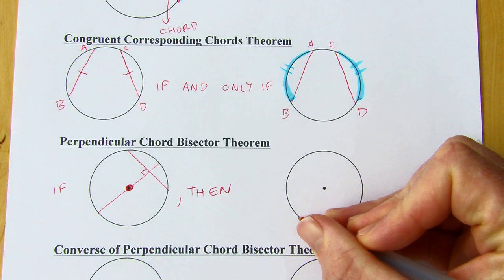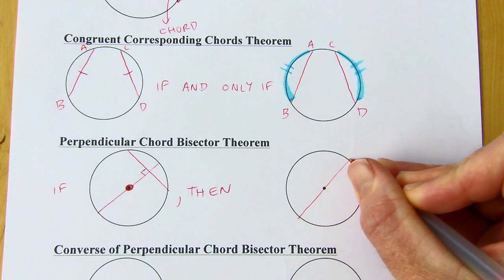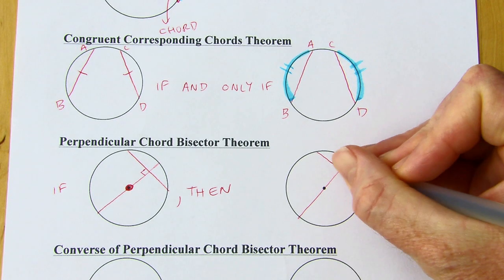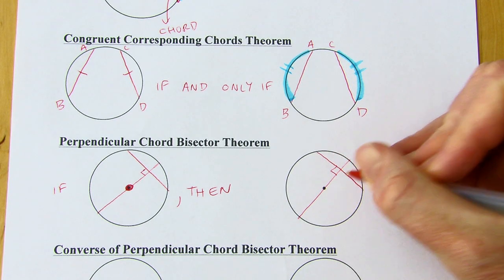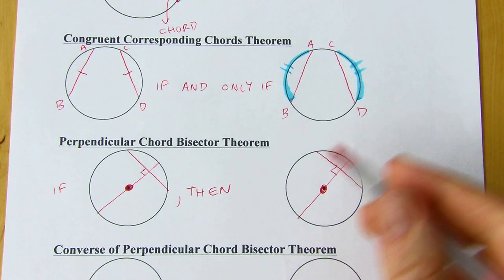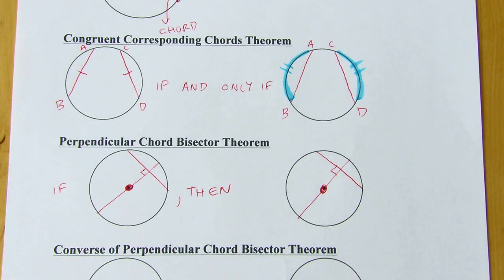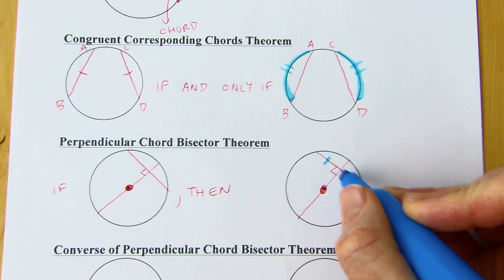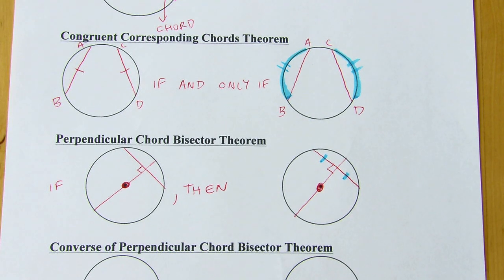Redrawing the picture: we still have a diameter that's perpendicular to a chord. When that happens, it does two things — it bisects the chord, and it also bisects the related arc. So the diameter cuts both the chord and the arc into two congruent pieces.